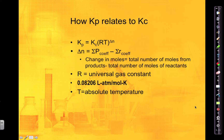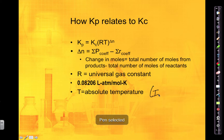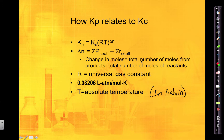Kp and Kc are related by the equation: Kp equals Kc multiplied by (RT)^ΔN, where R is the universal gas constant, T is the absolute temperature in Kelvin, and ΔN is the change in moles. To get ΔN, you take the total moles of products and subtract the total moles of reactants.